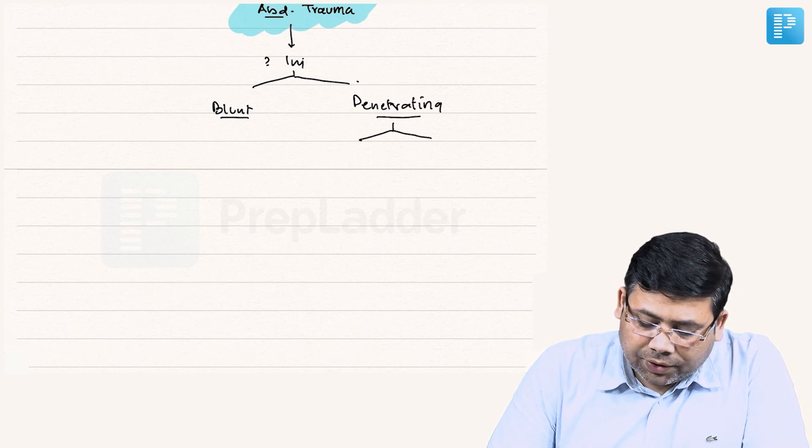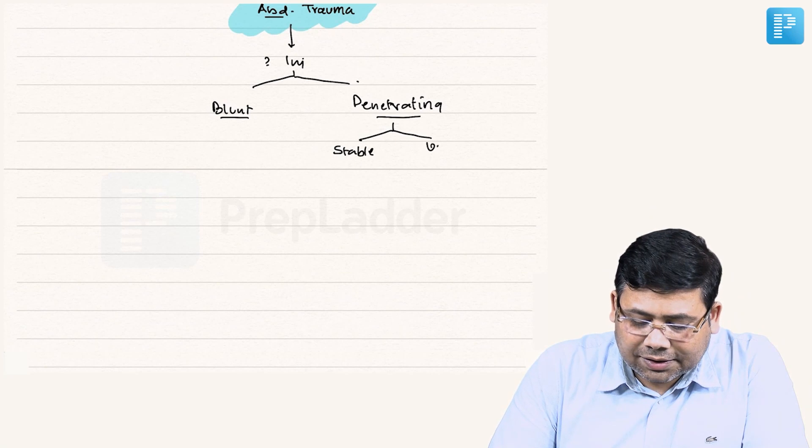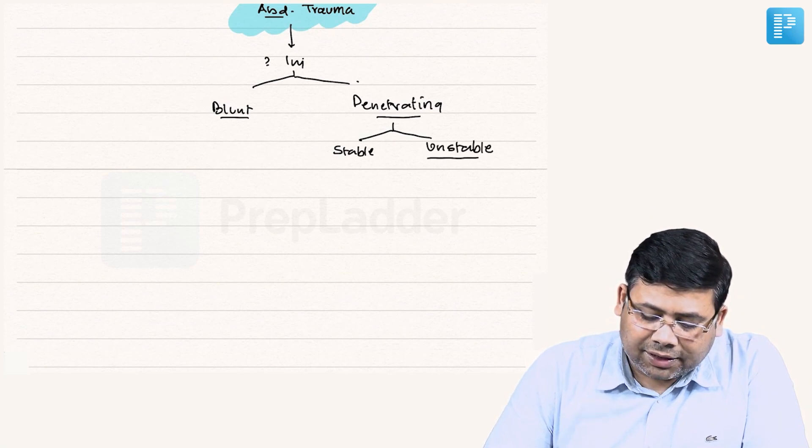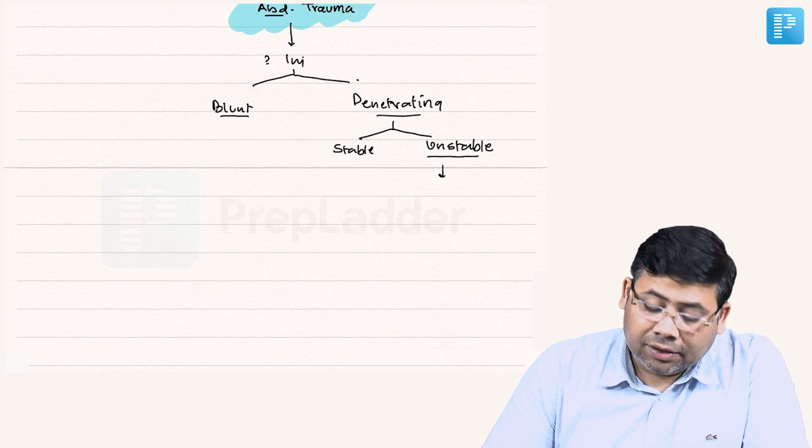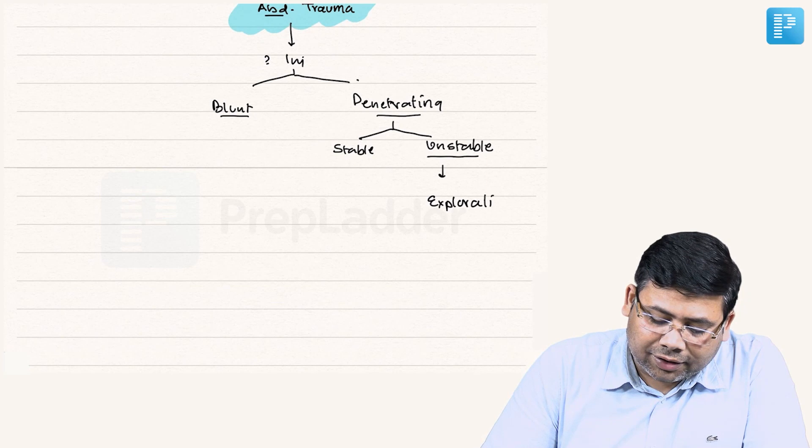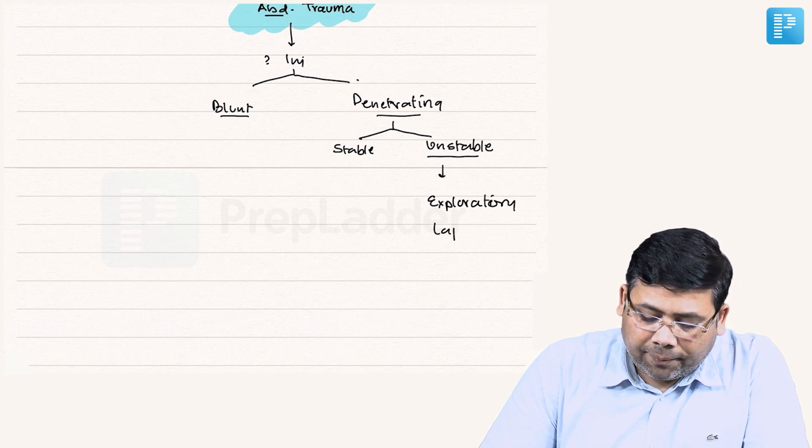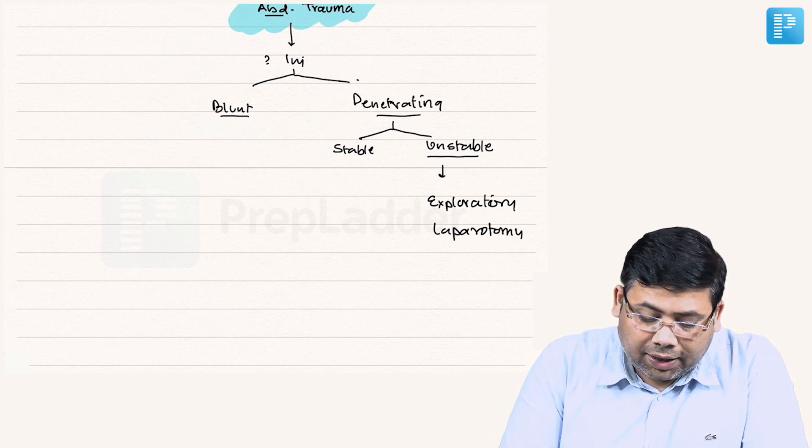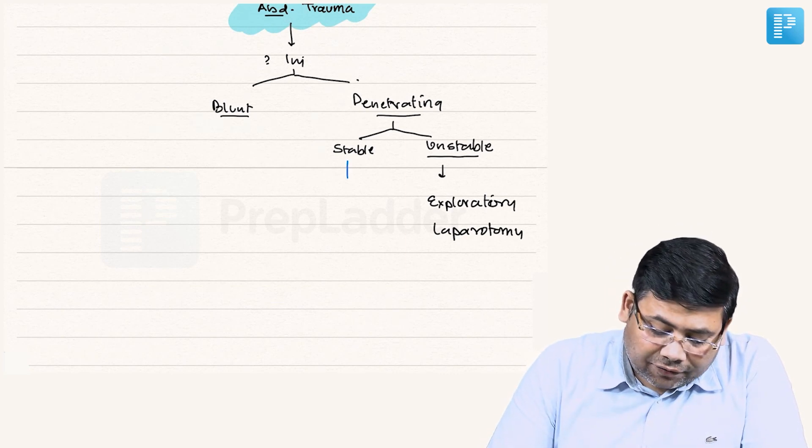If the patient is unstable, the very next thing that we need to go for is exploration. We don't waste time for anything, we go for exploratory laparotomy. On the other hand, if we have a stable status of the patient, what to do?